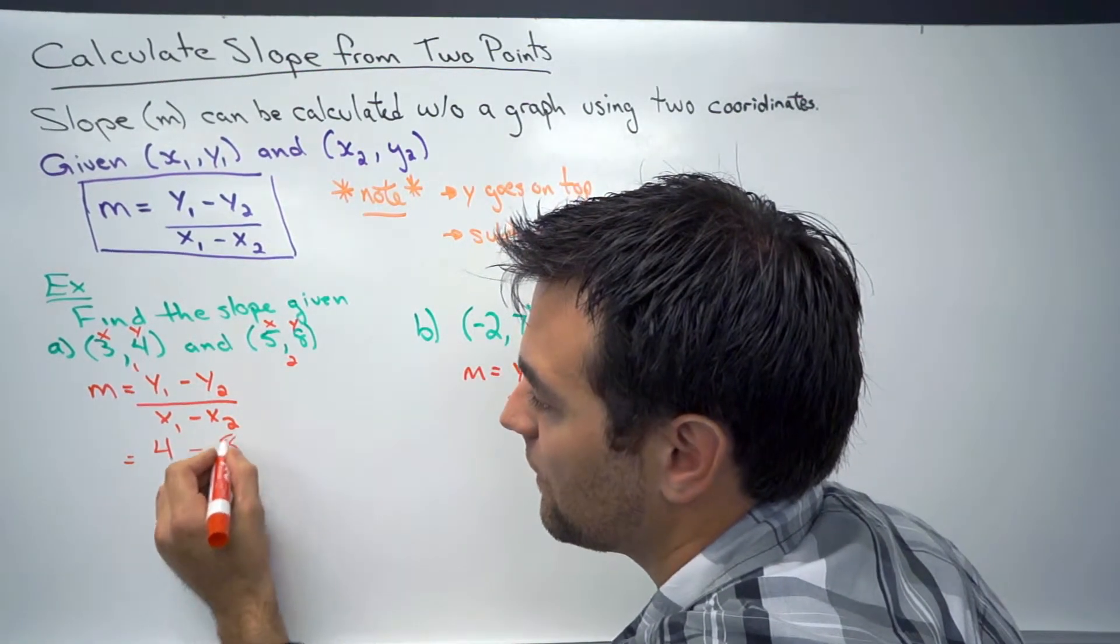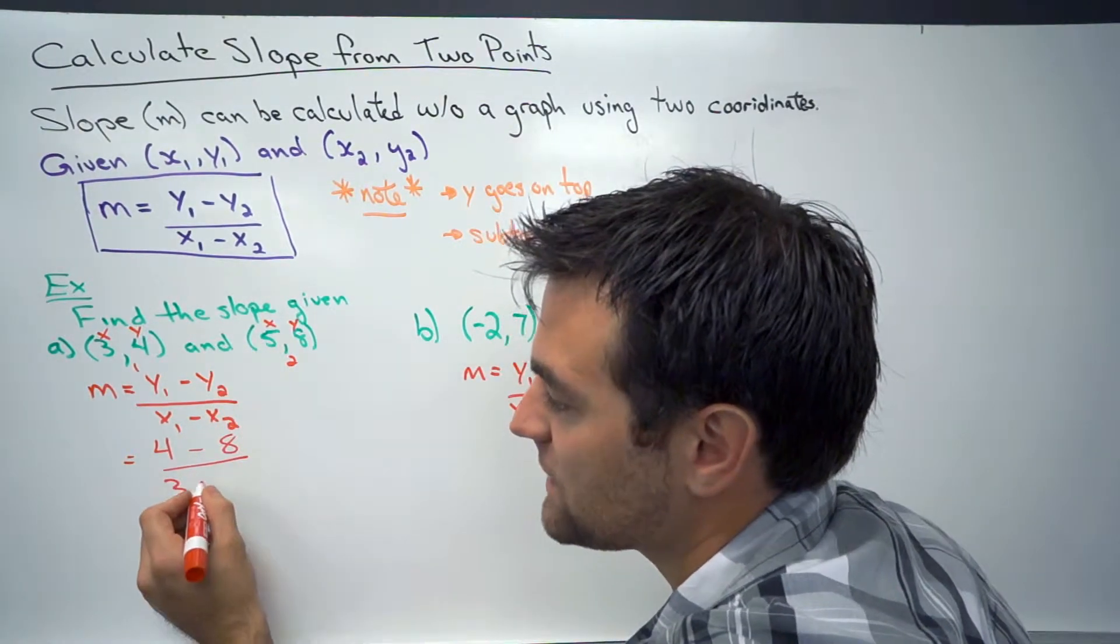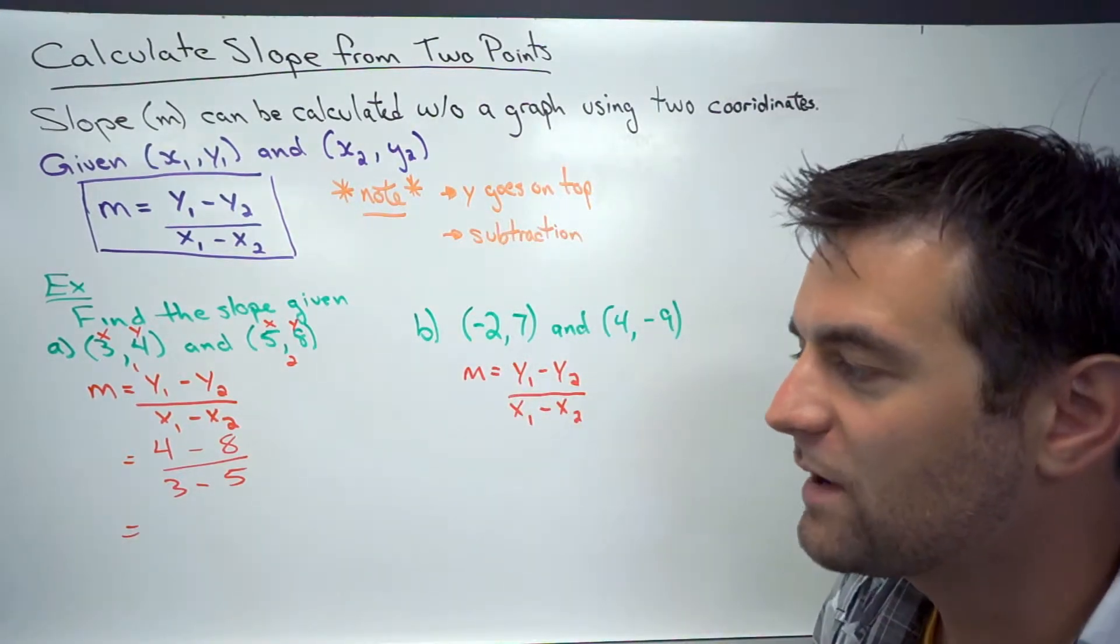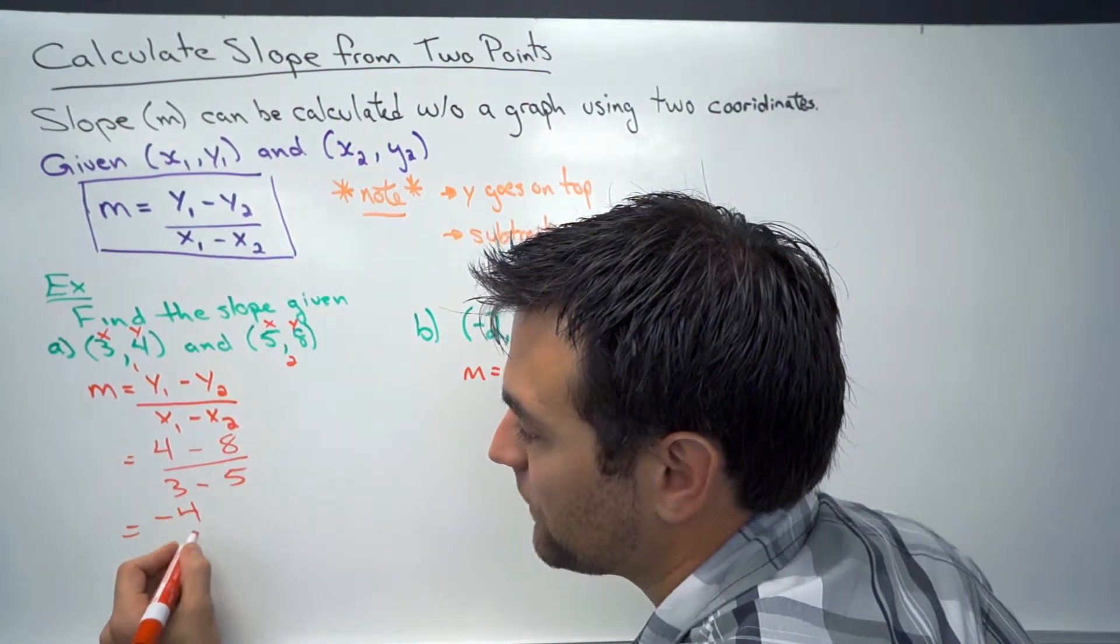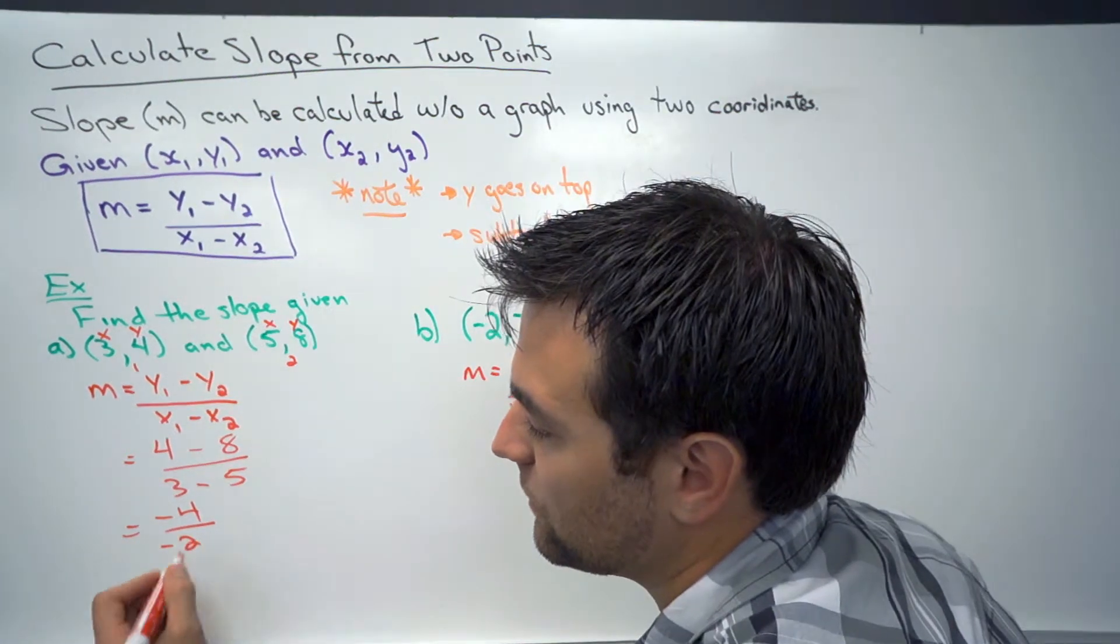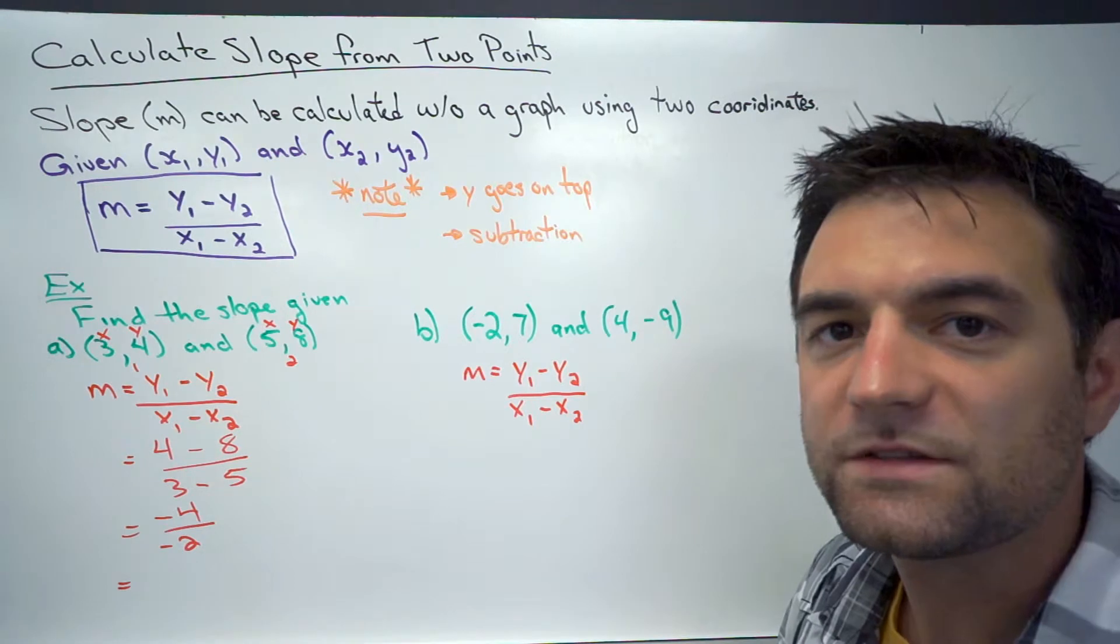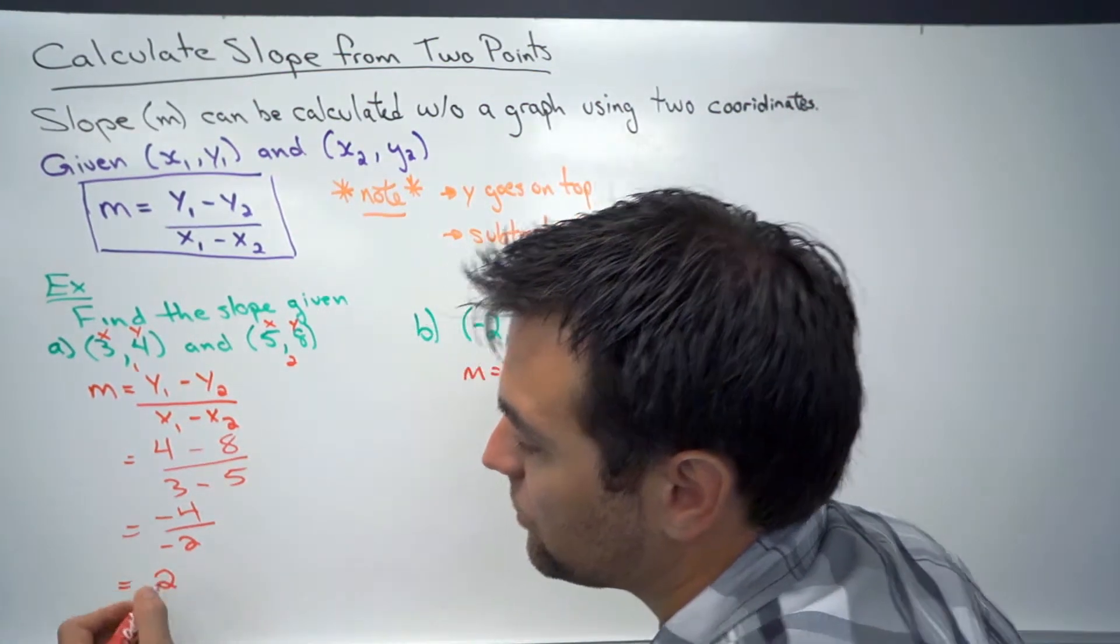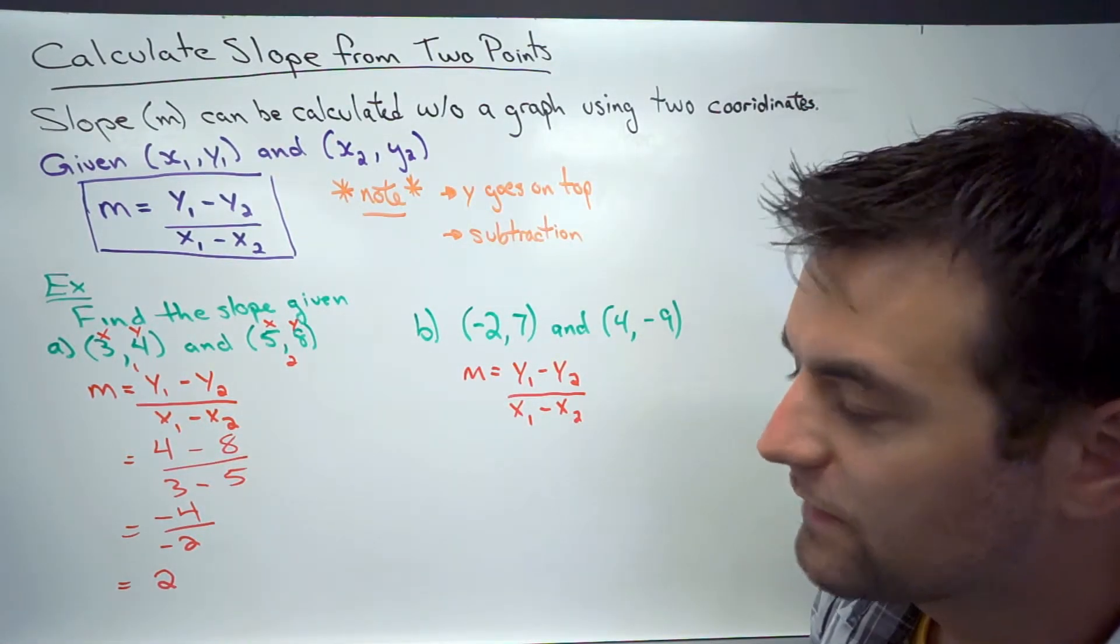So I need y1 minus y2, so that's the 4 minus the 8, over x1 which is the 3 minus x2 which is the 5. So 4 minus 8 over 3 minus 5. Well, 4 minus 8 that's going to give me negative 4, and 3 minus 5 that's going to give me negative 2. I have negative 4 over negative 2, and that simplifies down to 2. And there is my slope.